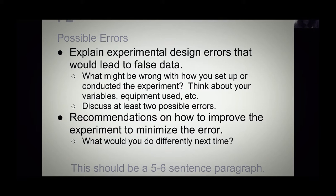The second part of the possible errors paragraph is recommendations on how to improve the experiment to minimize the error. So what would you do differently next time? Maybe you determined that you changed too many variables, so you might test things a little bit differently next time. The possible errors paragraph should be five to six sentences.